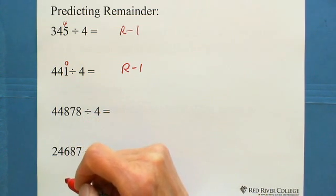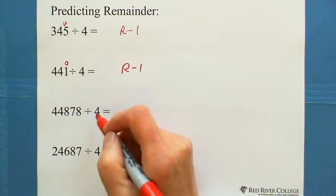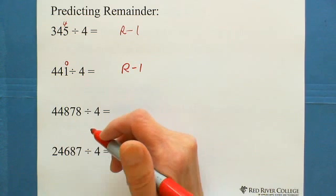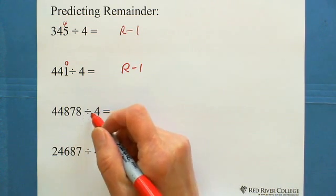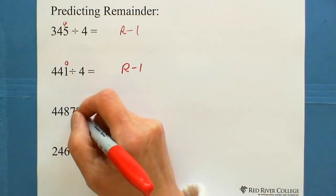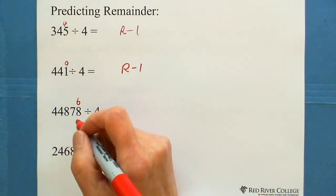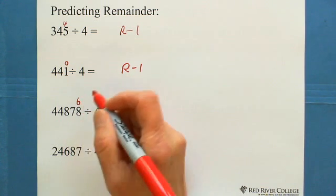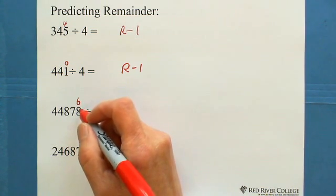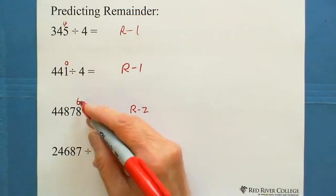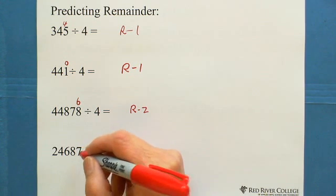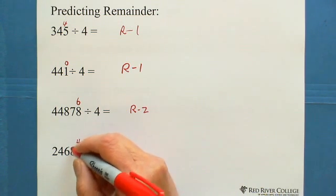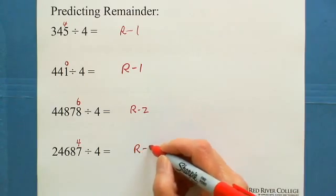For 78: think about the last two digits, 78. Is 78 divisible by 4? The closest number divisible by 4 is 76, because 76 divided by 4 is 19. So 78 is not divisible by 4, and the remainder is 2 — because 78 minus 76 is 2. For 87: the closest number divisible by 4 is 84, because 84 is divisible by 4. So the remainder is 3. You need to be familiar with the multiplication table for this.